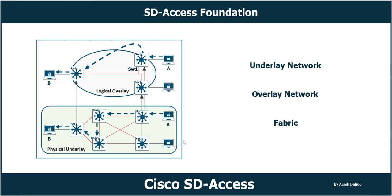As you can see here, we have a simple scenario with five switches — switch one, switch two, switch three, switch four, and switch five — and also three computers: computer A, computer B, and computer C. Computer A has some traffic to send to computer B. It can forward the traffic to switch one, and switch one, after checking its MAC address table, can forward it to switch four. Switch four checks the destination MAC address with its MAC address table and forwards it to switch five, and then to switch three.